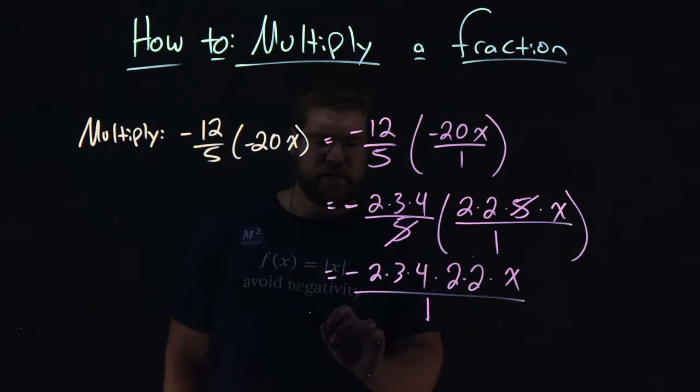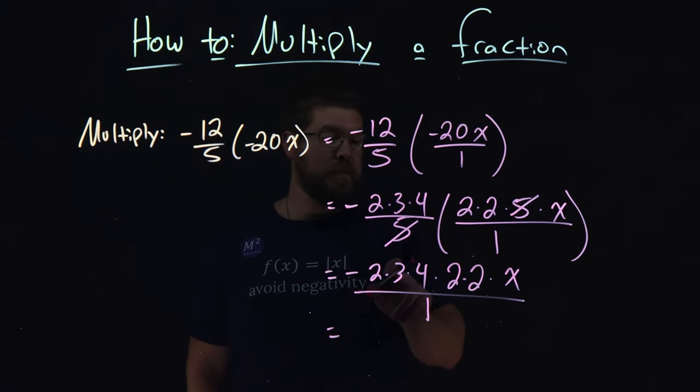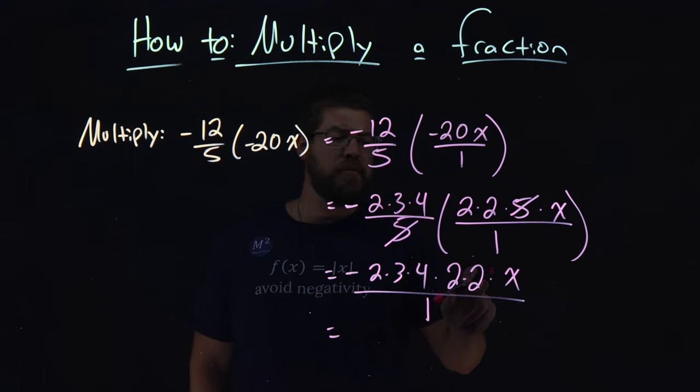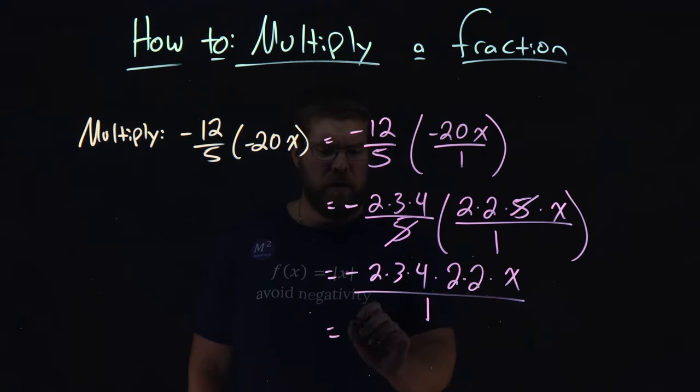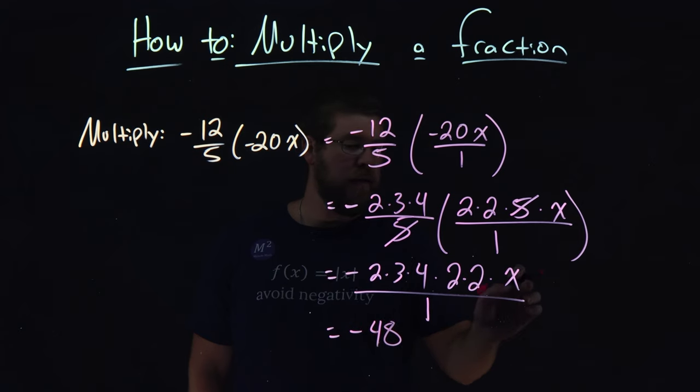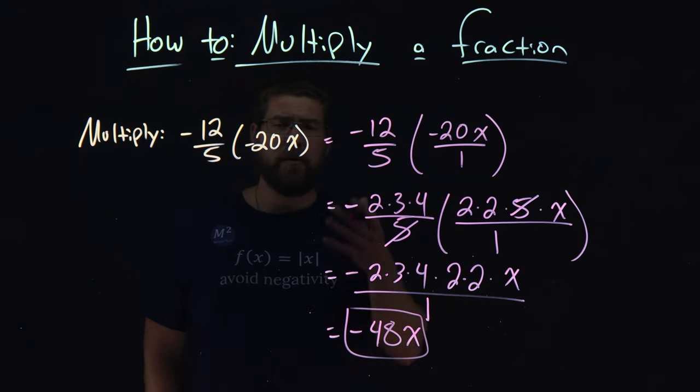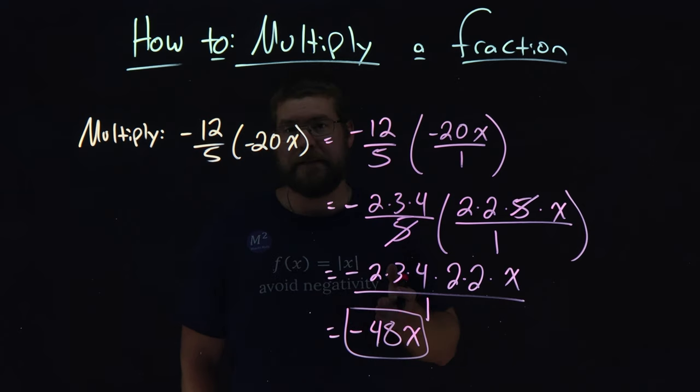This simplifies pretty simply here. 2 times 3 times 4, we know is 12 from before, times 2 is 24, times 2 is 48. So we have negative 48 and then just the x here. When we divide by 1, we don't really need that anymore, and there we have it. We've gone through a simple example, and we see an answer here of negative 48x.